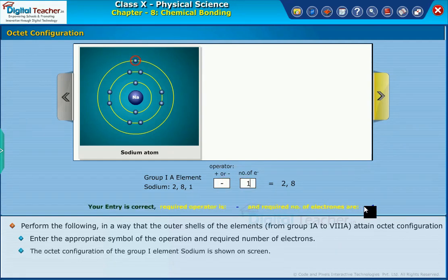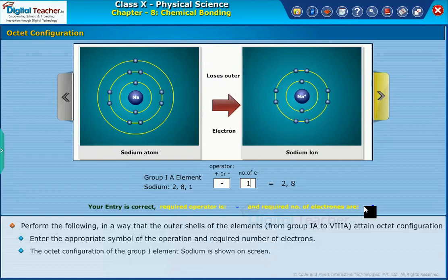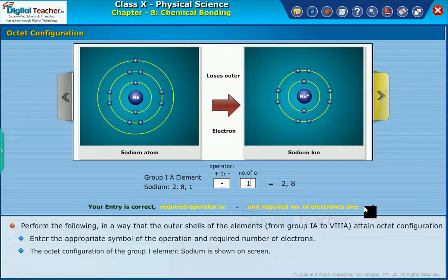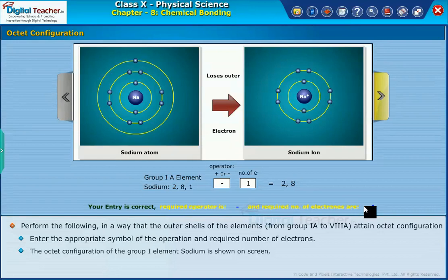The octet configuration of the group 1 element sodium is shown on screen. Sodium is a group IA element. It has one electron in its highest energy level. When this electron is lost, a positive sodium ion is formed. Hence, the sodium ion has an octet configuration.